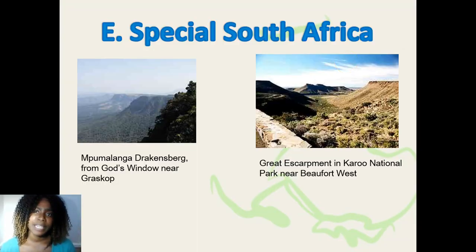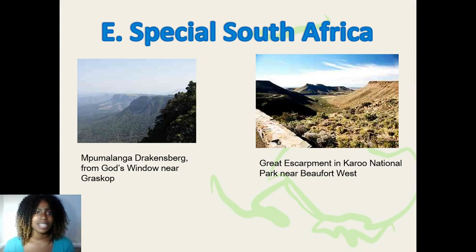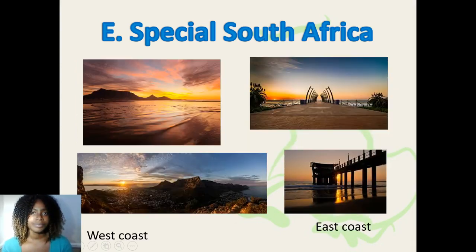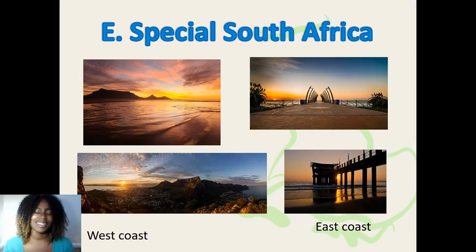South Africa is a special place with regards to light and air because of our mountains that rise from the sea, enabling people to research the atmosphere. A good example is the Mpumalanga Drakensberg from God's Window near Kranskop, and the great escarpment in the Karoo National Park near Beaufort West. The sunrises and sunsets over the west and east coast are clear evidence of how beautiful and special South Africa really is.